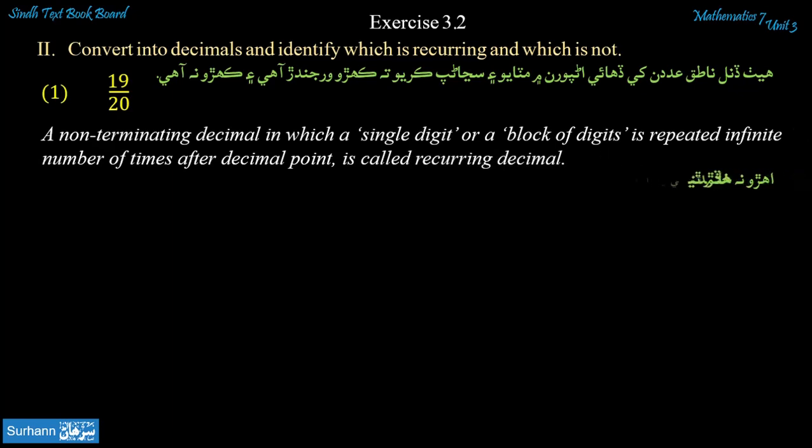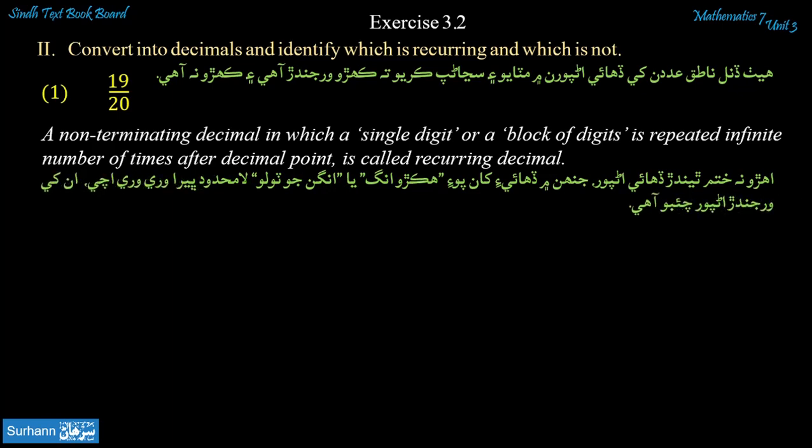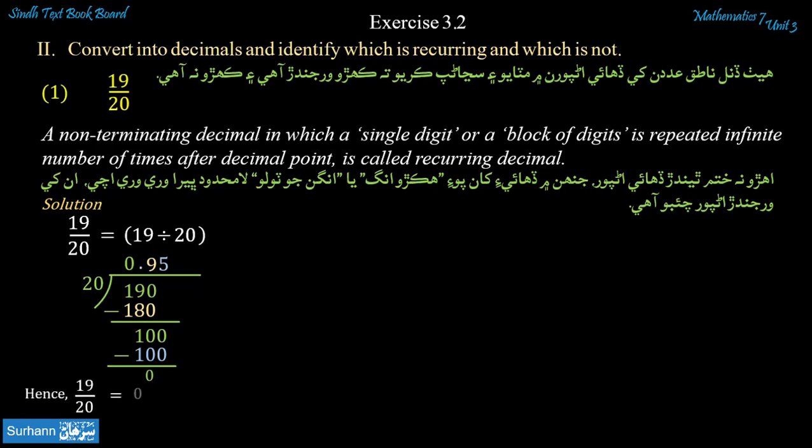Now let us start problem number one: 19 upon 20. It means divide 19 by 20. When you divide 19 by 20, you will get 0.95. Hence, the decimal of 19 upon 20 is 0.95. Here, no digit is repeated an infinite number of times, so it is a non-recurring decimal.